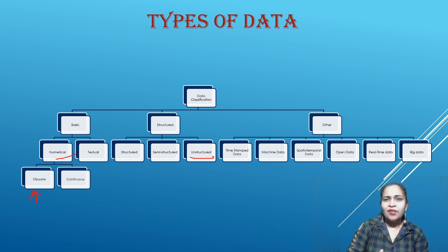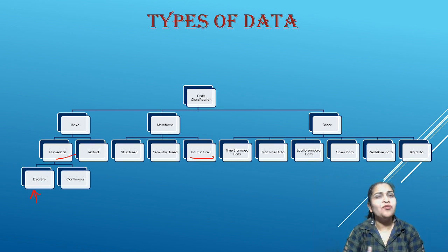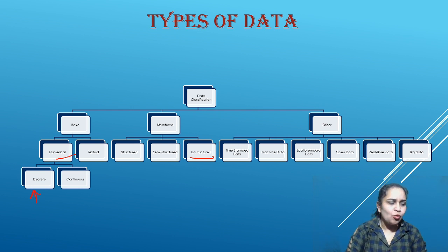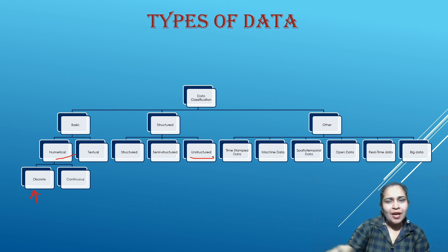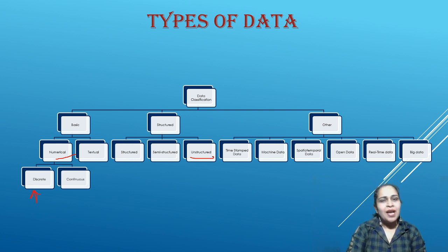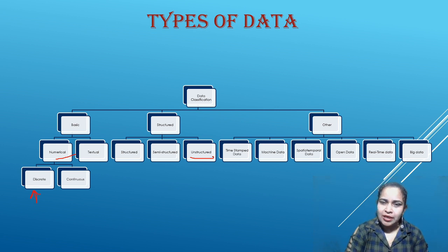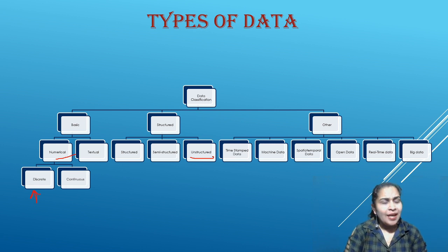Semi-structured data is a combination of both structured and unstructured. When we give labels or tags to unstructured data, it becomes semi-structured. For example, if I have a folder of music files and I organize them into different folders according to the singer's name, that is semi-structured data — the unstructured content has been given a tag or label.